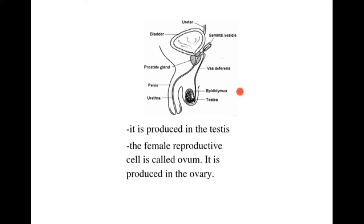Once the sperms are produced in the testis, they are stored in the part called the epididymis, and after they are stored there, they are released out through the tube called the vas deferens all the way to the urethra. The urethra is a long tube that ensures both the urine and sperms come out of the penis. The penis introduces the sperms to the vagina. The prostate glands produce a fluid called semen that ensures the sperm swims.